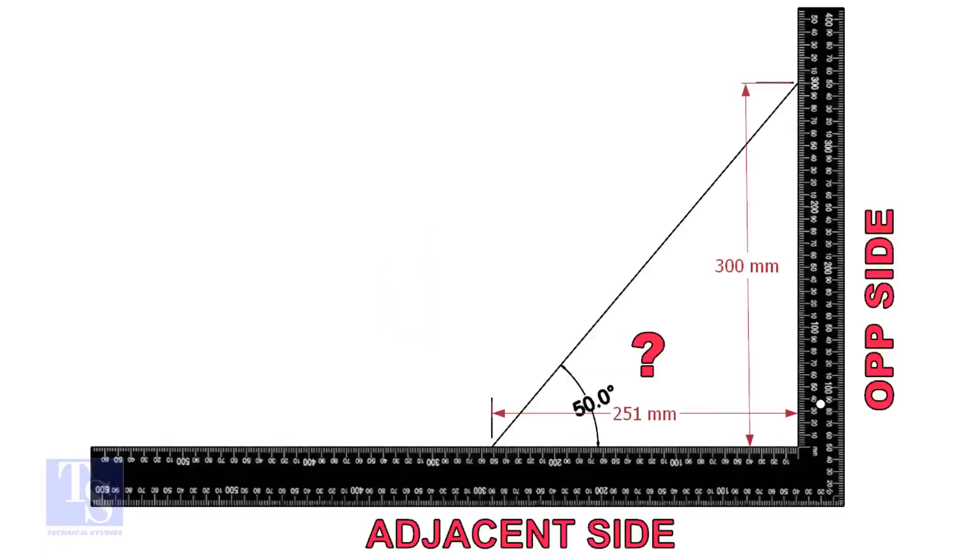Let us learn some TAN rule calculation. TAN degree is equal to opposite side divided by adjacent side. For this formula, we know only the TAN degree. Let us assume the opposite side is 300 millimeters.